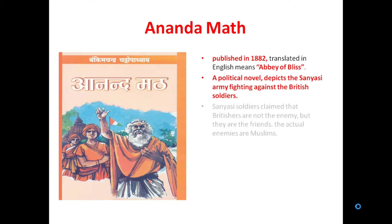The novel is also based on the Sanyasi rebellion. The Sanyasi rebellion refers to a time when untrained Sanyasi soldiers were fighting and beating the highly experienced British army. Ultimately they found that the British could not be defeated, and therefore they claimed that the British are not the enemy but are friends. The actual enemies, they claimed, are Muslims. So Muslims were treated as the actual enemy whereas the British were treated as friends. So you can see how every writer will have their own notion of what real independence means.